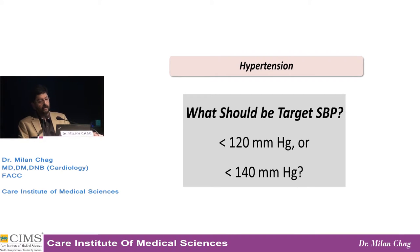The big question is: what should be the target systolic blood pressure in a patient who is non-diabetic and has hypertension? Should the target be less than 120 or less than 140?